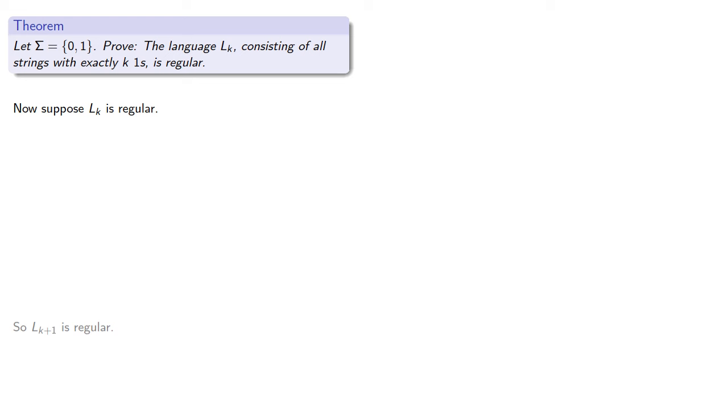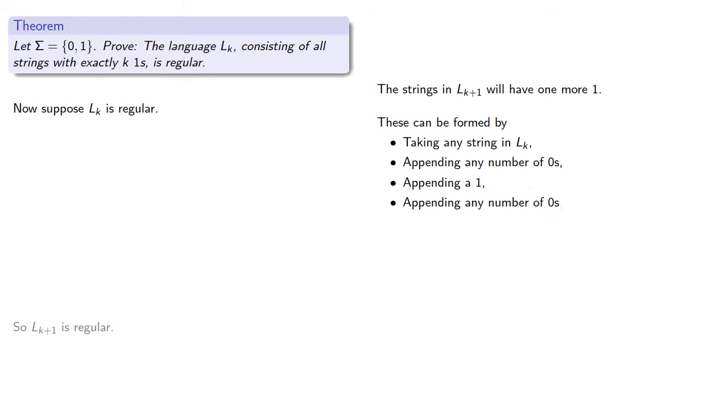So let's think about that. The strings in Lk plus 1 will have one more one. And so these can be formed by taking any string in Lk, appending any number of zeros, appending a one, and then appending any number of zeros. Actually, the second step is unnecessary, but unnecessary doesn't affect the validity of the proof. So we'll leave it in.